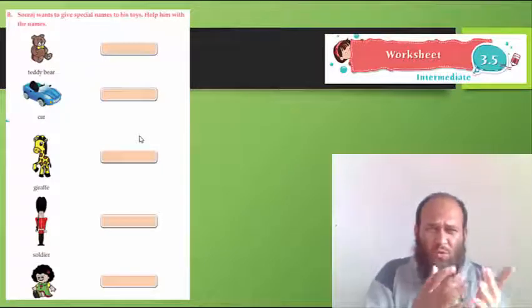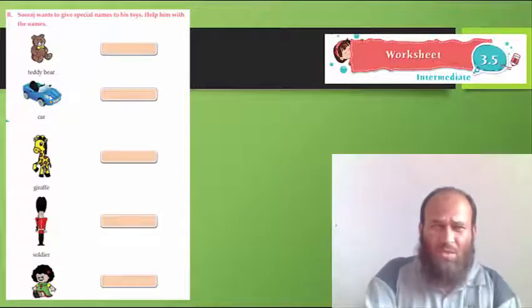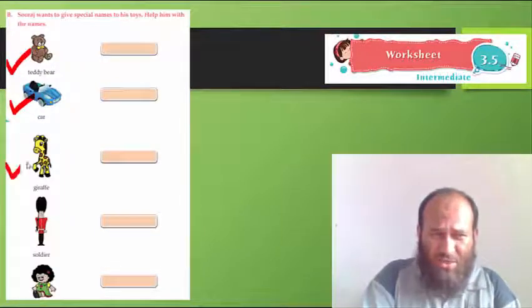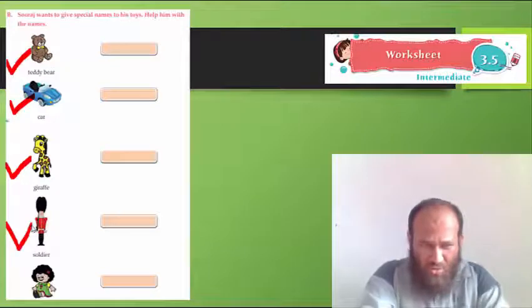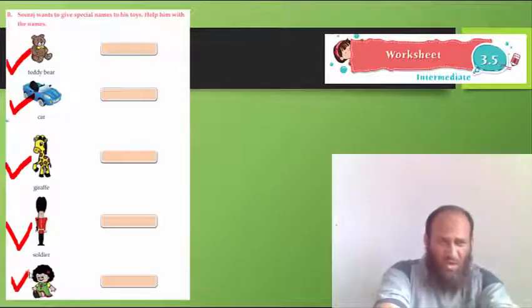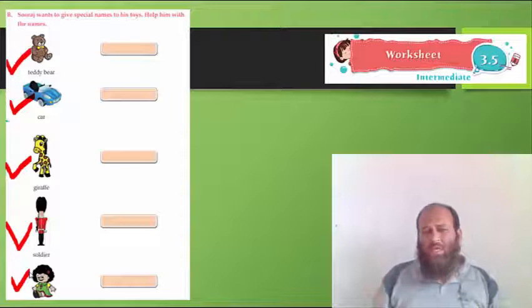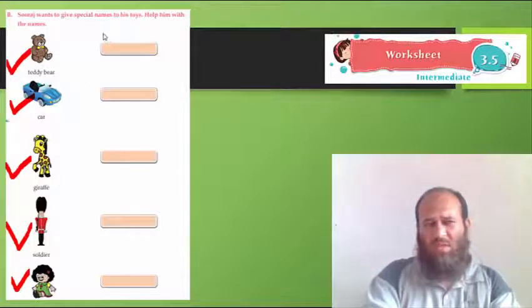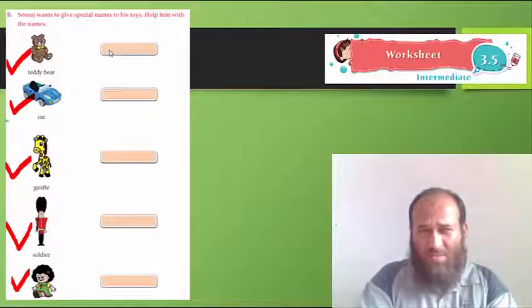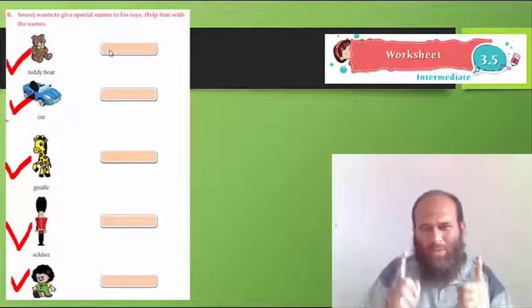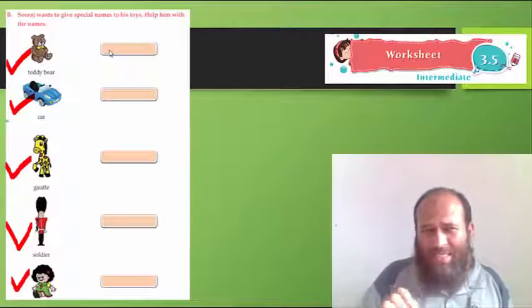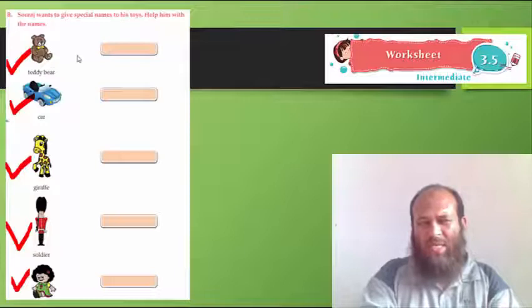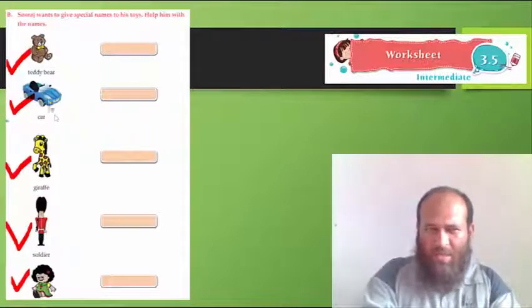But who will help Suraj if you are going now? Come on. You have to help Suraj. Suraj has many toys. Suraj has a teddy bear. Suraj has a car. Suraj has a giraffe. A soldier. And a doll. And Suraj needs our help to give names to these animals. So, are you ready to help Suraj? Yes. So, you will help Suraj write names. Give these animals, toys, special names.